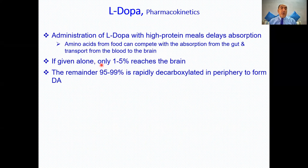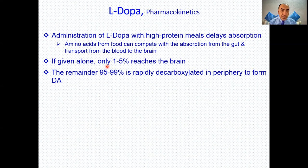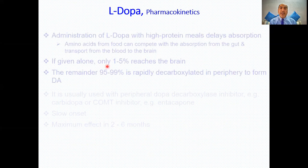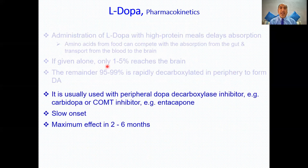If given alone, only one to five percent of levodopa will reach the brain, because most of it is converted into dopamine in the periphery and dopamine cannot pass the blood-brain barrier. The solutions are: use peripheral dopa decarboxylase inhibitors such as carbidopa and benserazide, which allow more levodopa to pass into the brain; or use COMT inhibitors such as entacapone, which prevent degradation of levodopa and dopamine. Levodopa has a slow onset — maximum effect may take two to six months.